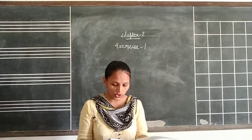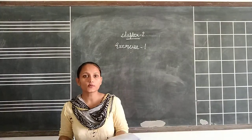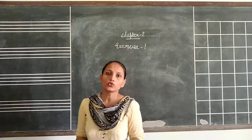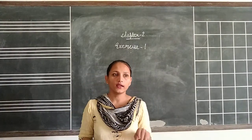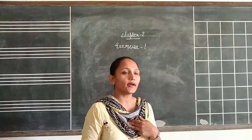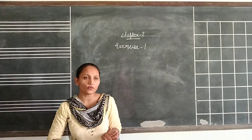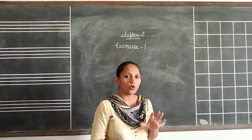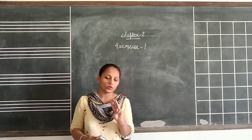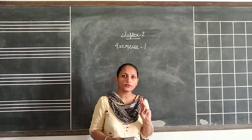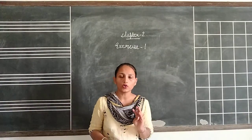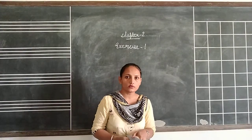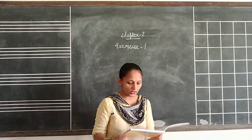Addition. What is addition? Addition means putting together two or more numbers. Suppose you have 3 copies and somebody gives you 4 more copies, then how many copies do you have now? 3 plus 4: counting 3, 4, 5, 6, 7. Now you have 7 copies. In this way we solve addition.